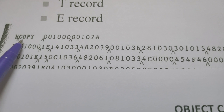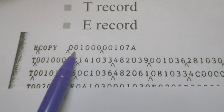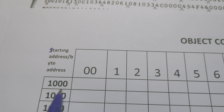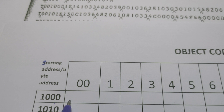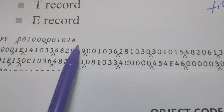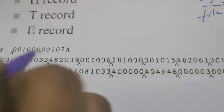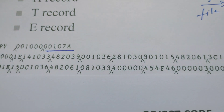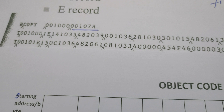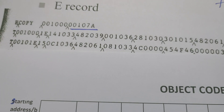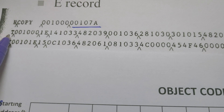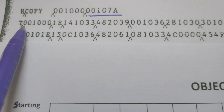The header record tells the loader the name of the program is COPY and the starting address is 1000. It also provides the length of the object code which is 1078. All these informations are communicated by the assembler to the loader. Now the loader reads the first text record.